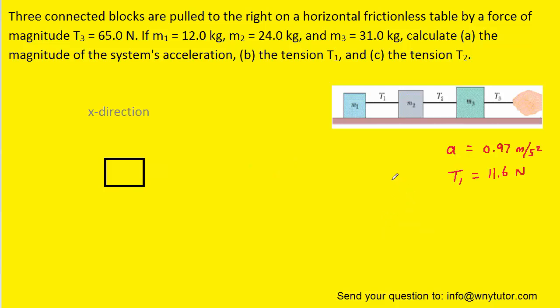Now, to find the tension T2, there would be a couple of ways of doing it. One way would be to treat blocks m1 and m2 as a single system. If we look carefully, we can see that the only force acting on that system would be the T2 force, which is what we're trying to solve. So let's try that approach.